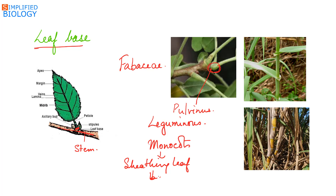In a sheathing leaf base, the leaf base is expanded and it partially or wholly covers the stem — either half or completely clasping the stem.